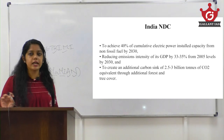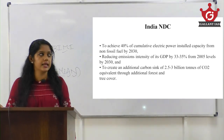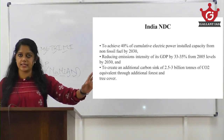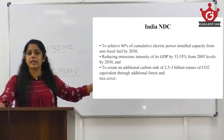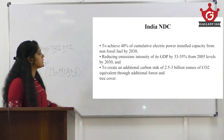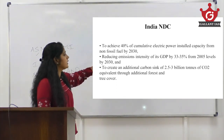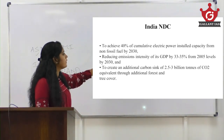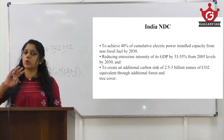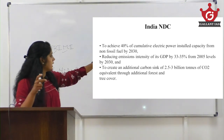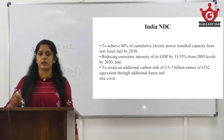India's NDC/INDC came up at COP21 in Paris. Three very important aspects of India's NDC: first, to achieve 40% of cumulative electric power installed capacity from non-fossil fuel by 2030; second, reducing emission intensity of its GDP by 33–35% from 2005 levels by 2030; third, to create an additional carbon sink of 2.5 to 3 billion tonnes of CO2 equivalent through additional forest and tree cover. These must be memorized — they can be asked in both prelims and mains.